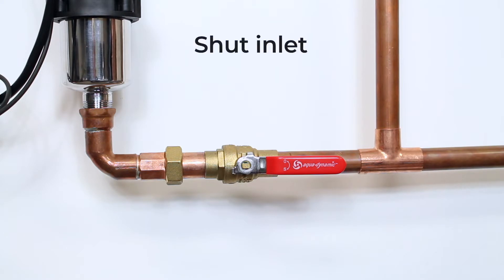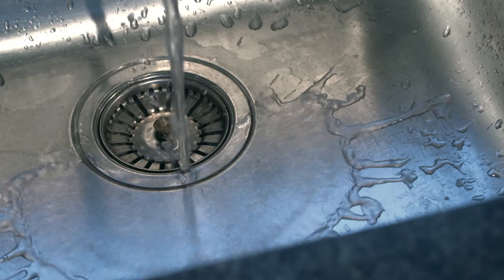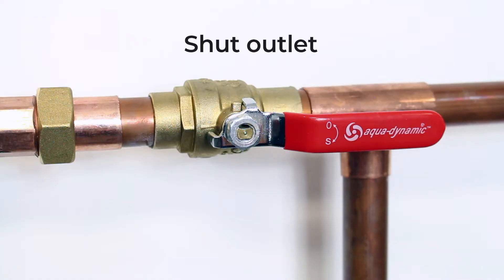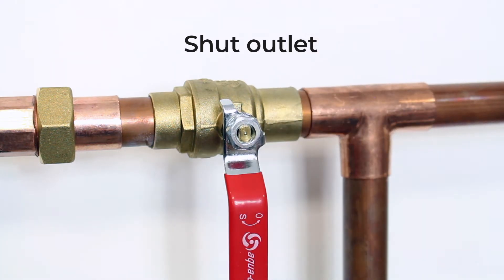Shut off the main inlet valve. Release water pressure by opening a downstream faucet and then close the outlet shutoff valve. If there is not an outlet shutoff valve, expect water to drain from the system.